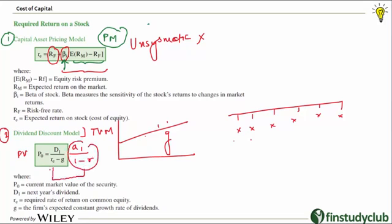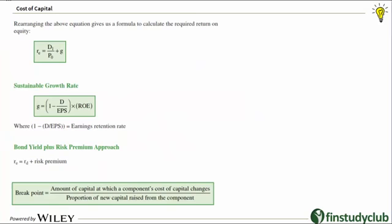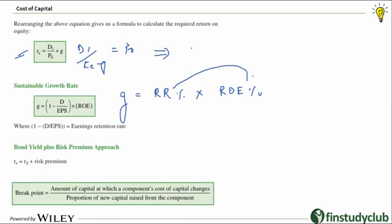Gordon's formula for the present value of a growing perpetuity gives us: P0 = D1 / (Ke − g). A key limitation is that growth must be less than the cost of equity; otherwise the denominator becomes negative and you'd get a nonsensical share value. Rearranging the formula gives the cost of equity: Ke = D1/P0 + g. The sustainable growth rate — the rate at which dividends will grow — is the retention rate multiplied by the return earned on the retained portion. Retention rate can also be expressed as 1 minus the dividend payout ratio.